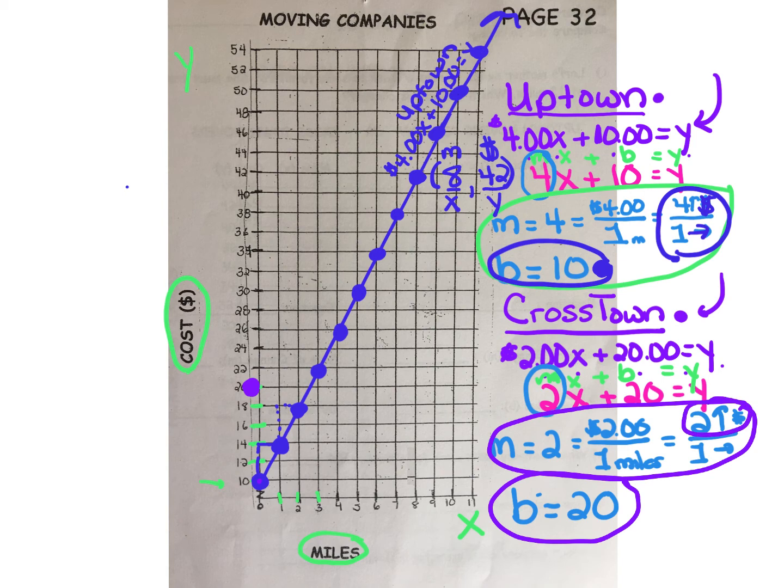But this rises at a slower rate or pace, only $2 per every one mile. So go up $2 from $20 to $22 over one mile. Up $2 over one mile. Continue rising at that rate: up $2 over one mile, not two blocks, but up $2.